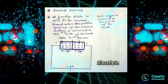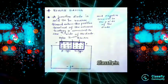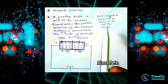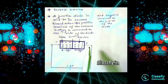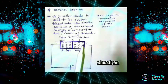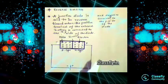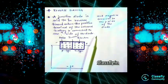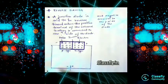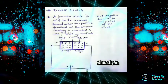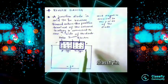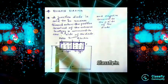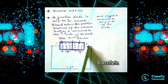A junction diode is said to be reverse biased when the positive terminal of the external battery is connected to the N side of the diode, and the negative terminal is connected to the P side. This is just the opposite of forward biasing — both charges are in opposite directions. The P type has majority holes and minority electrons, and the N type has majority electrons and minority holes.